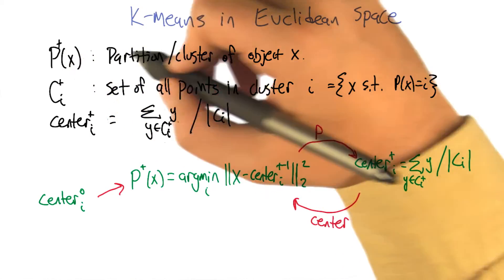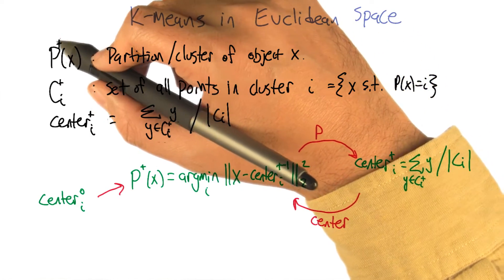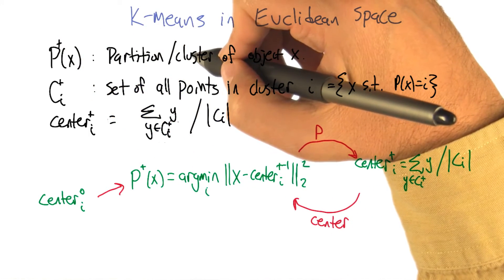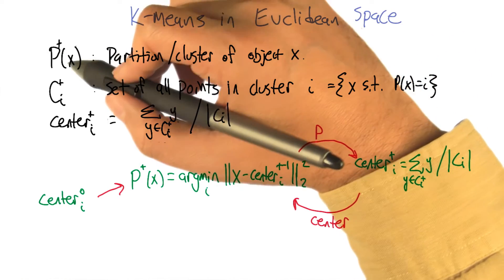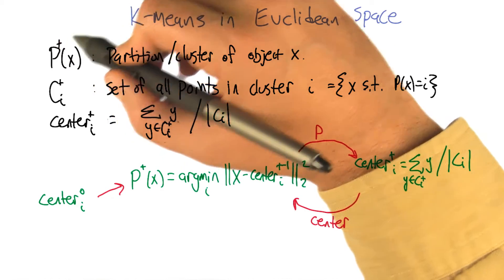The notation I'm going to use is: at any given moment in the algorithm, there's some partition P^t of x. These clusters are defined the same way as before, which just returns some identifier for what cluster x is in. This is at iteration t of k-means.